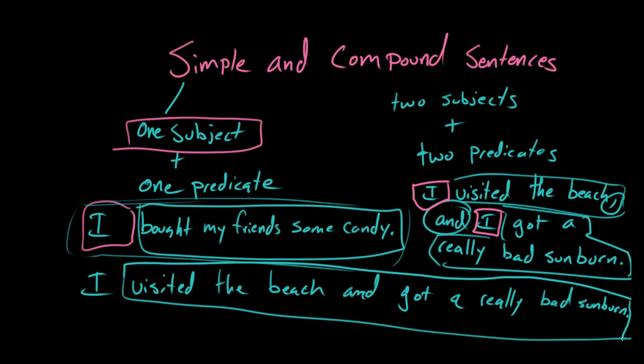Because this looks like what you would call a compound predicate. Right. Since there's only one subject in this sentence, there's only I and it's only said once. Right? You don't have I visited the beach and I got a really bad sunburn. That whole thing visited the beach and got a really bad sunburn is, you're right, it is a compound predicate.